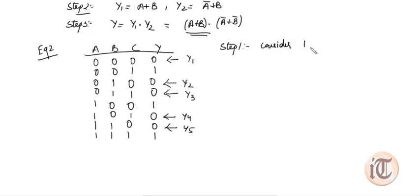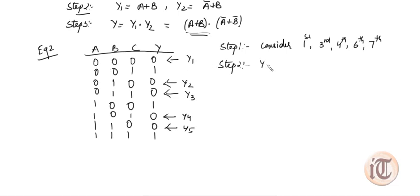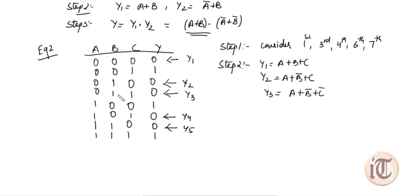In step one we consider the first, third, fourth, sixth, and seventh entries. In step two we write the sum term for each combination. For a POS expression, when a variable is zero we write the uncomplemented form. So: Y1 = A+B+C, Y2 = A+B-bar+C, Y3 = A+B-bar+C-bar, Y4 = A-bar+B+C-bar, and Y5 = A-bar+B-bar+C.